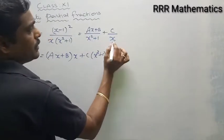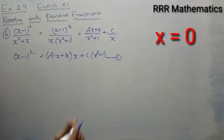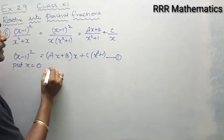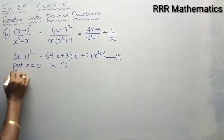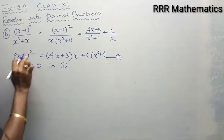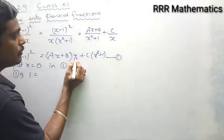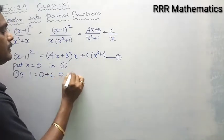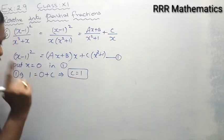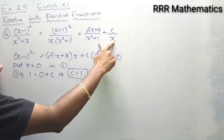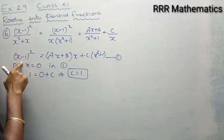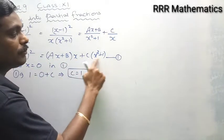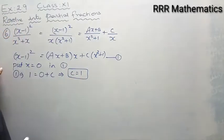Now, I will equate the denominator factor x to 0. Put x equal to 0 in equation 1. The left side: 0 minus 1 is minus 1, and minus 1 whole square is 1. The first term on the right becomes 0. The second term: 0 square plus 1 is 1, times c. So 1 equals c, giving c equal to 1.